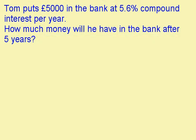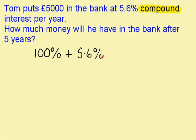The important thing about this question is that it's compound interest, not simple interest. Compound interest is when you earn interest on your interest. Everything starts out at 100% and we're adding on 5.6% per year. This gives us 105.6%, giving us the multiplier of 1.056.